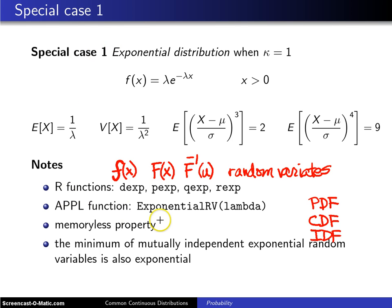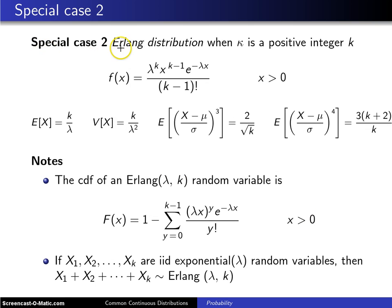The second special case is known as the Erlang distribution. You have an Erlang distribution when the parameter kappa assumes a positive integer value k, and in that case the probability density function looks like this. The mean is k over lambda, the variance is k over lambda squared, the skewness is 2 over the square root of k, and the kurtosis is 3 times k plus 2 divided by k.